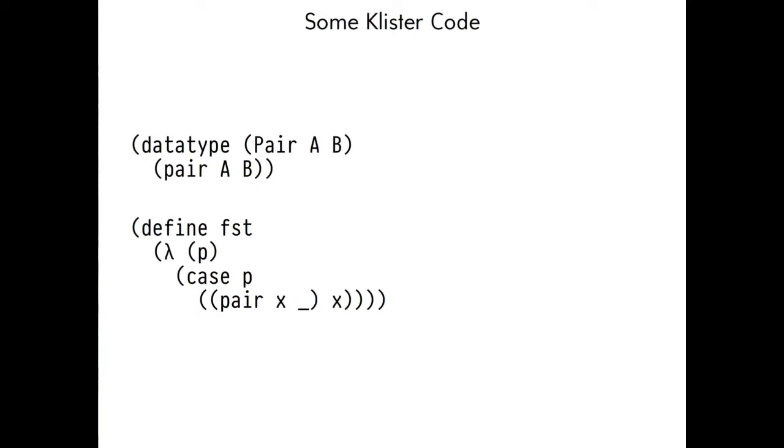So the program example you see on your screen starts with a data type definition. We're defining a data type called pair, which takes two type parameters, A and B, and has a single constructor, also called pair, which takes an A and a B as arguments. If there are more constructors, they just follow after the definition of pair. We follow the AGDA convention of writing big things with big letters and small things with small letters, as opposed to the more typical Haskell convention where you have data types with capital letters and type variables with small letters.